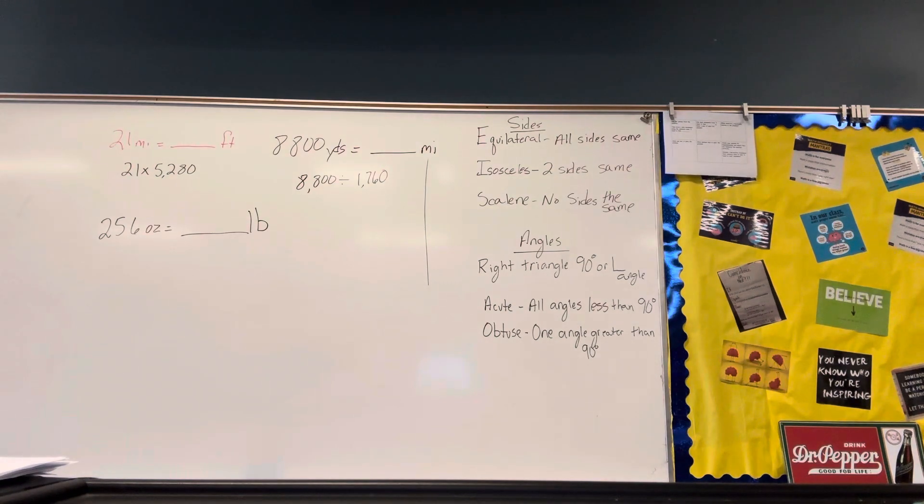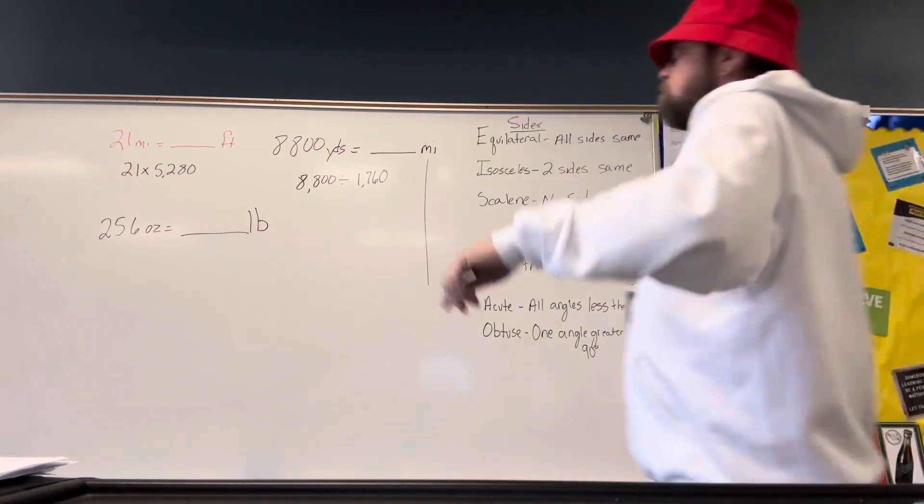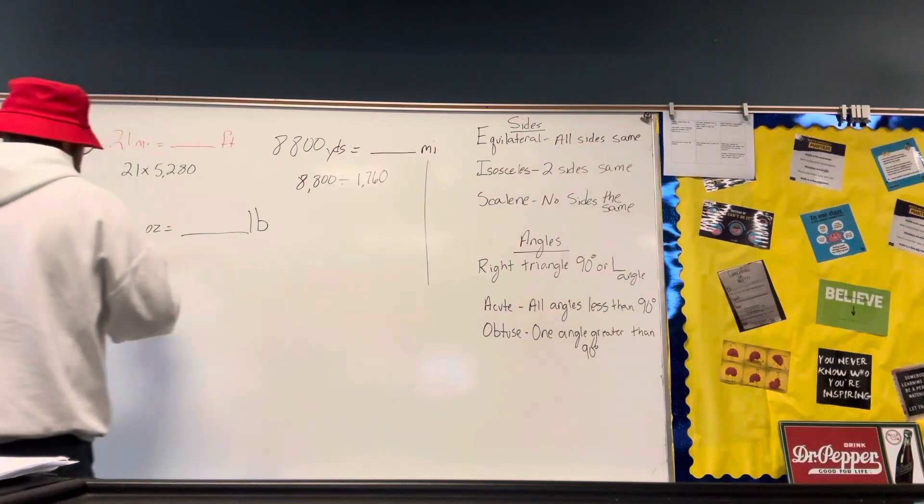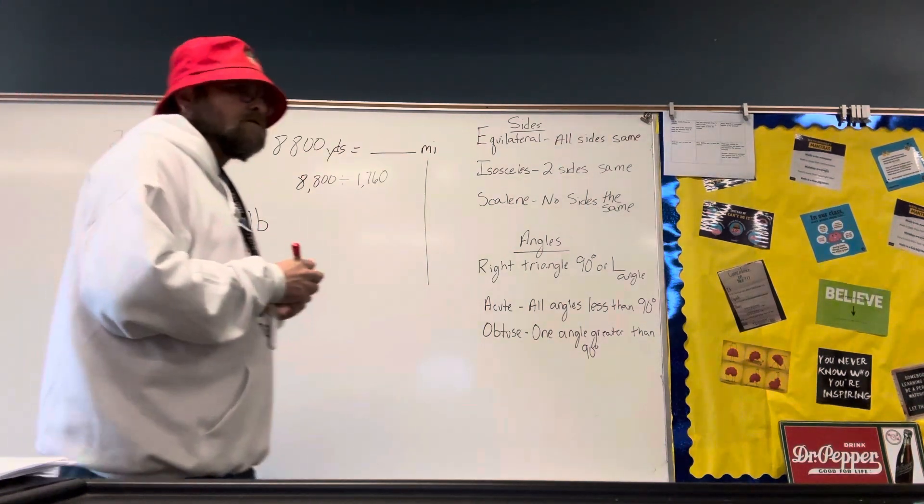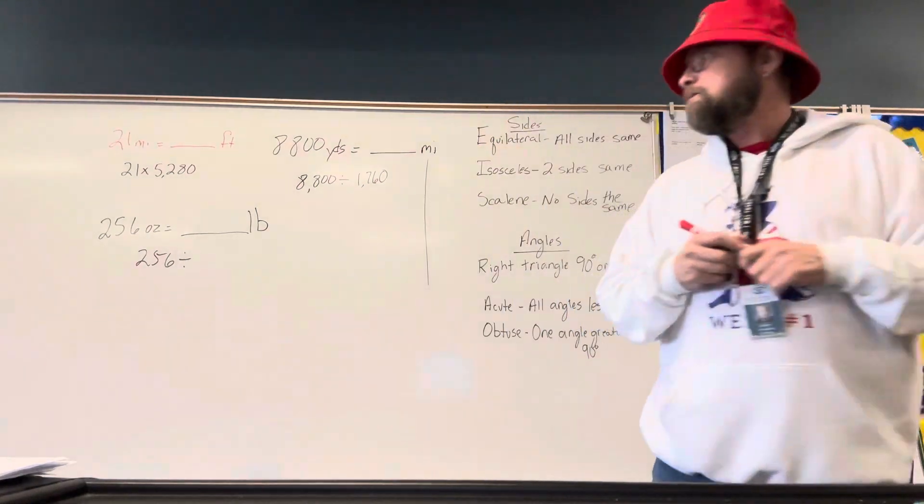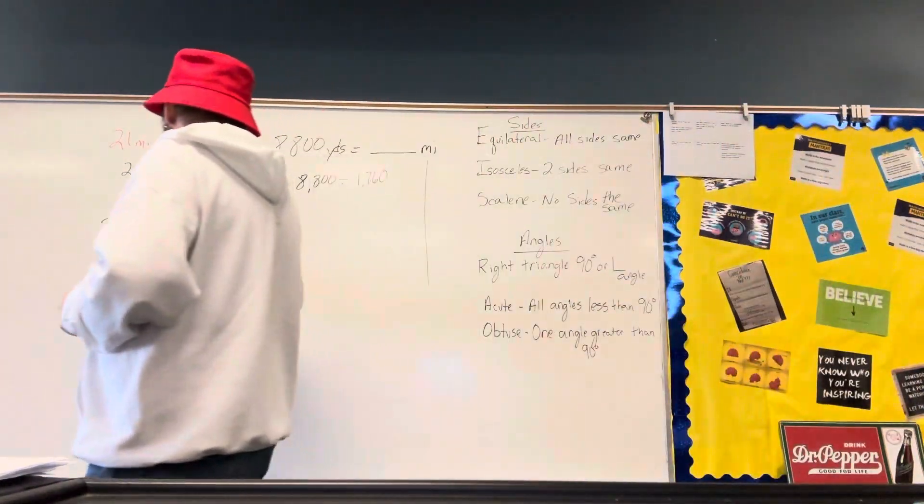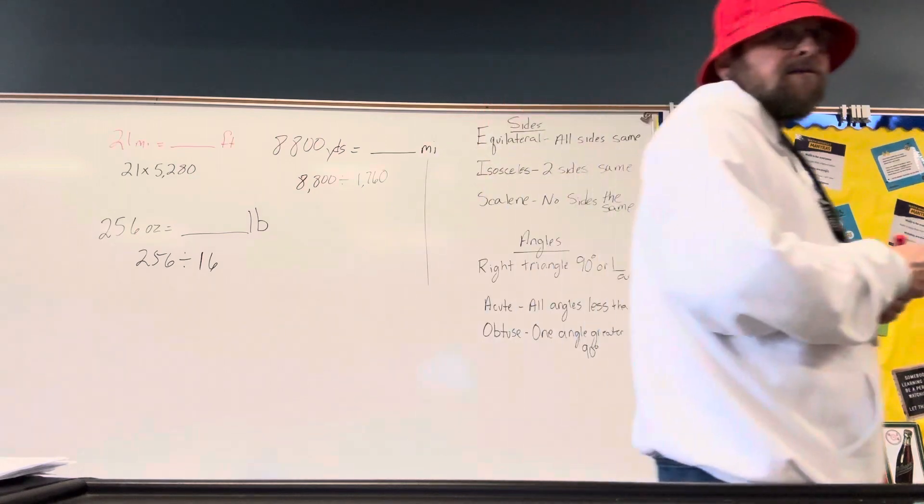Divide. Divide, because ounces are smaller than pounds. So, we're going to divide, 256. And how many ounces are in one pound? 16. 16.